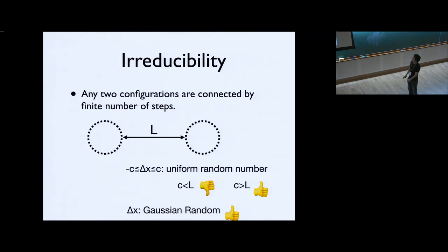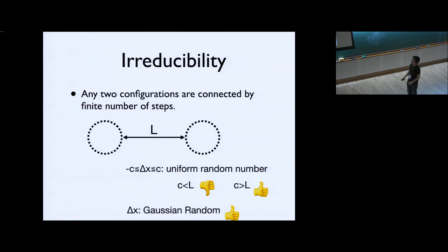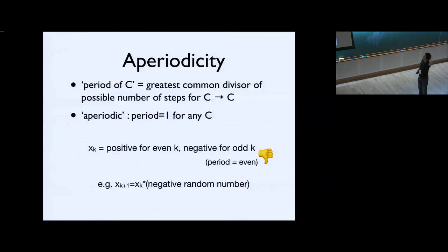If we take delta-x to be a Gaussian random number, arbitrarily large values can be obtained with small but finite probability — so there is always a finite probability of transitioning between any two configurations, satisfying irreducibility. The necessity of this condition is obvious: if we can never sample certain configurations, we never get the right distribution.